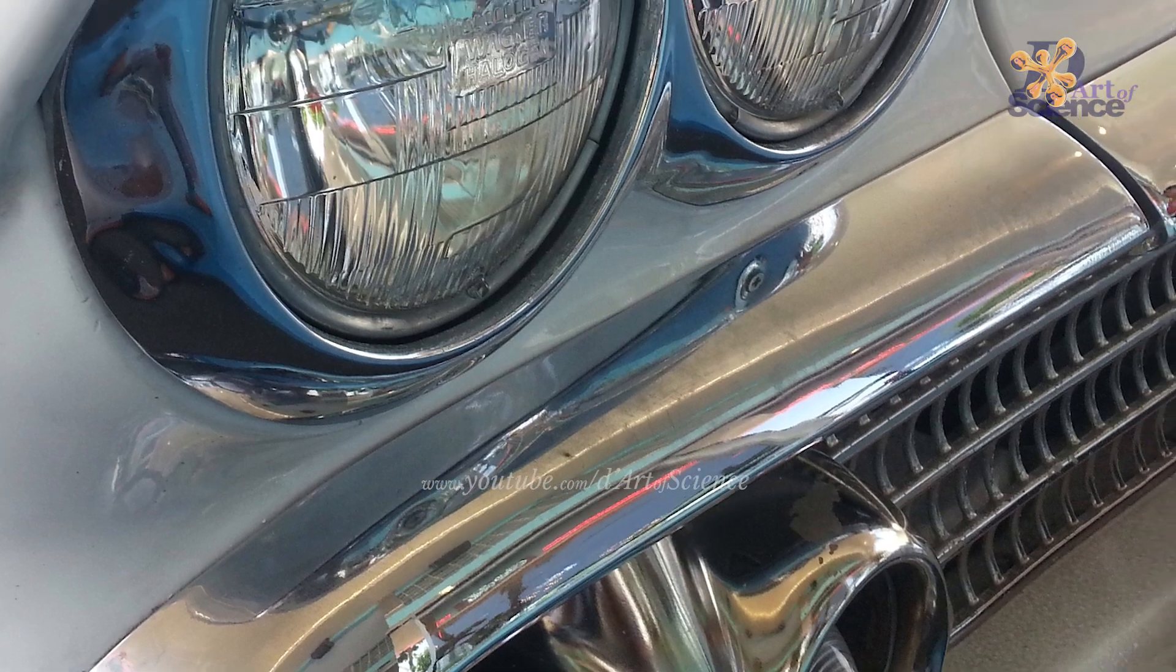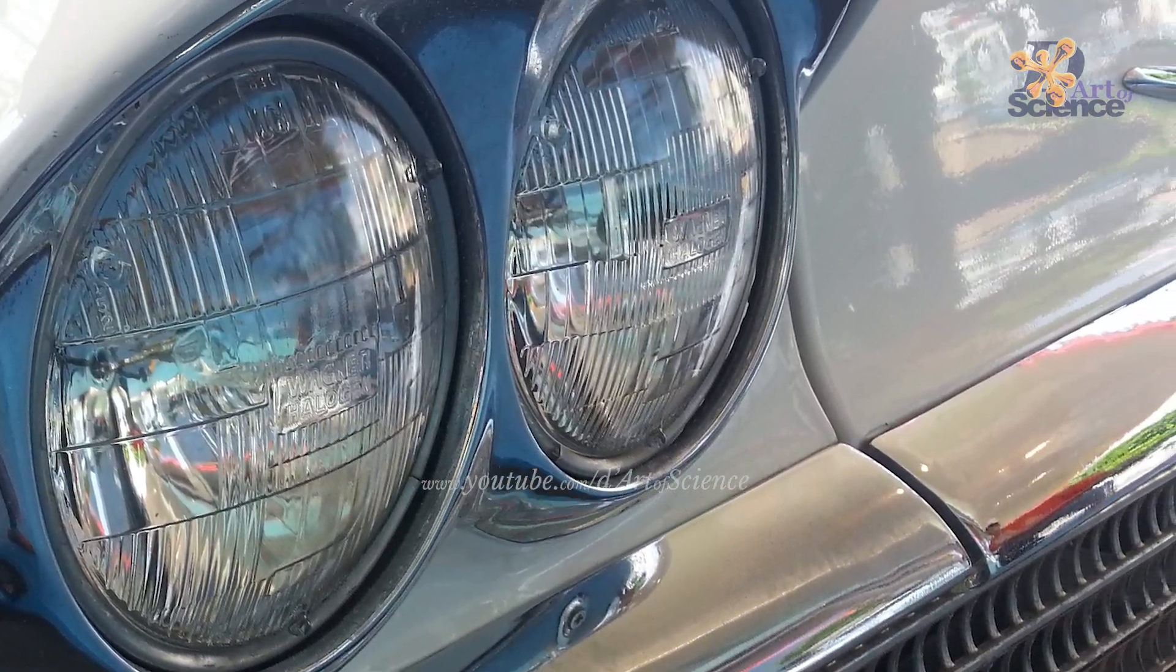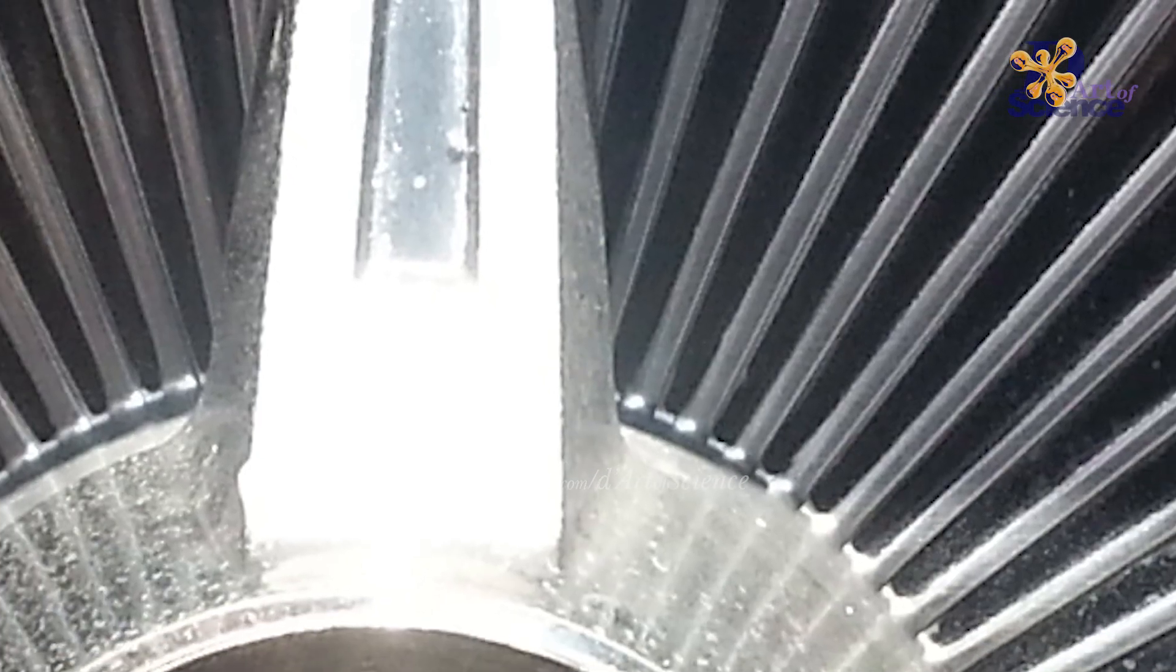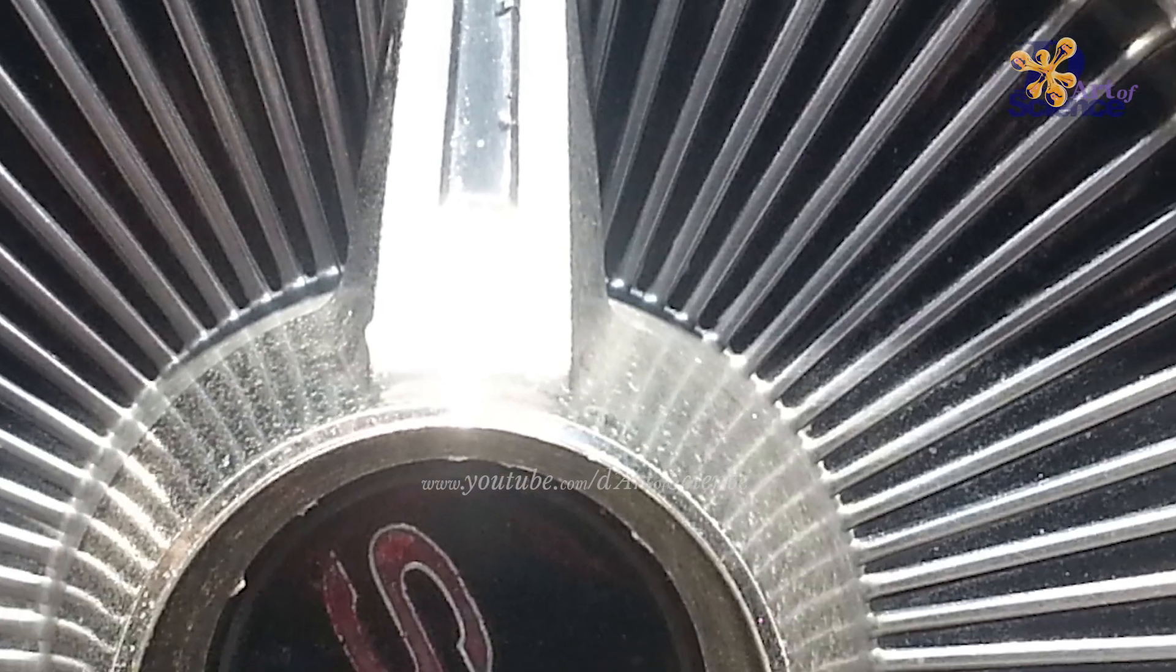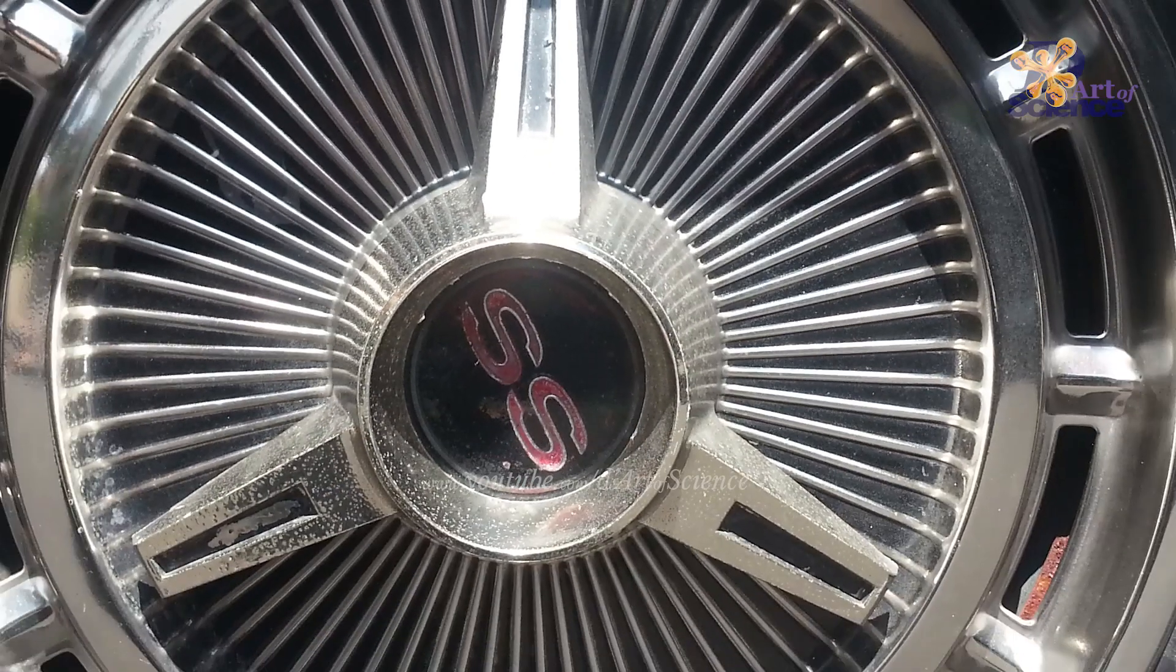Electroplating could either be done to protect a metal that would otherwise rust easily, like steel parts of bikes and taps, which are plated with chromium, and we call it chrome plating.